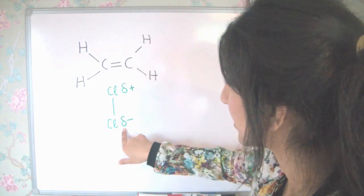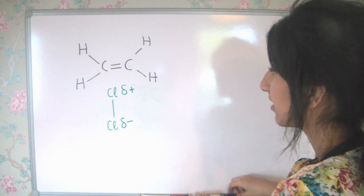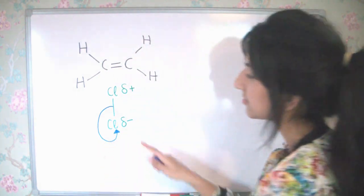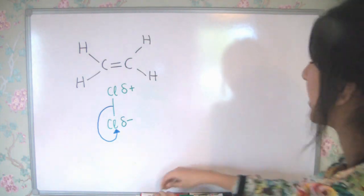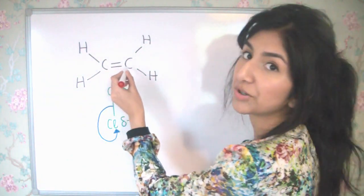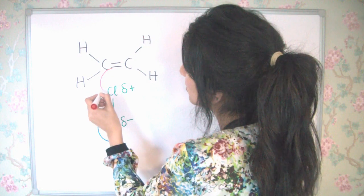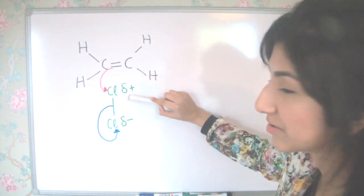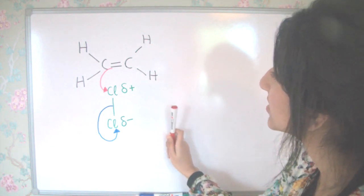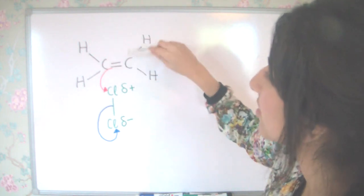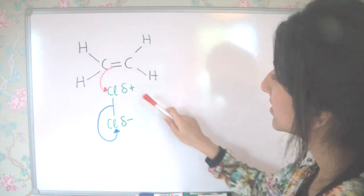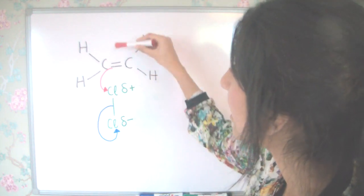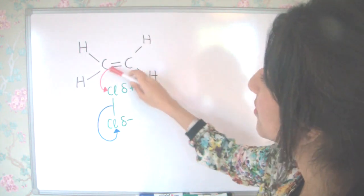So this will cause this bond to break, heterolytically, and the pair of electrons between the two chlorine atoms will go to this one. And the pair of electrons from this double bond will go to bond with this chlorine atom. So we have the bonding pair of electrons between the two chlorine atoms going towards this chlorine atom, which is partially negative because the electron-rich area here is repelling the pair of electrons this way. So this bond will break heterolytically, giving this chlorine the two electrons that were in the bond. And a pair of electrons from this double bond here will go to this chlorine atom.